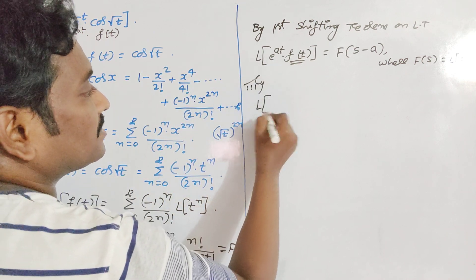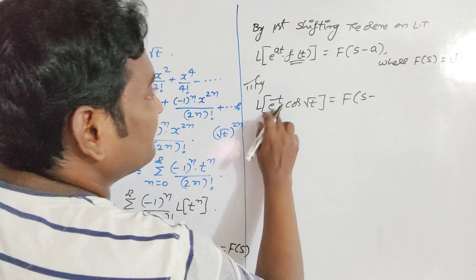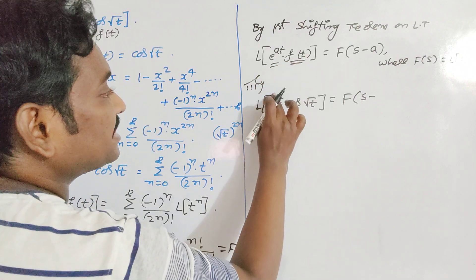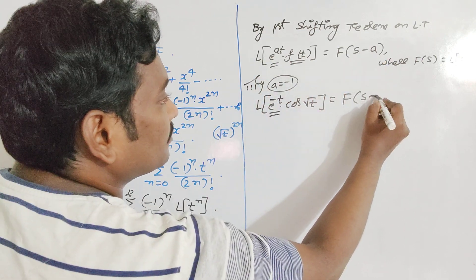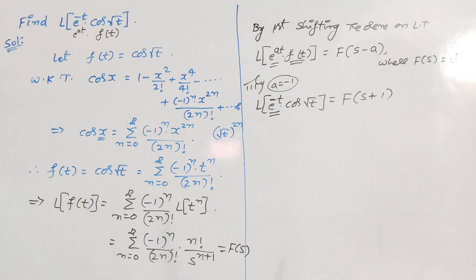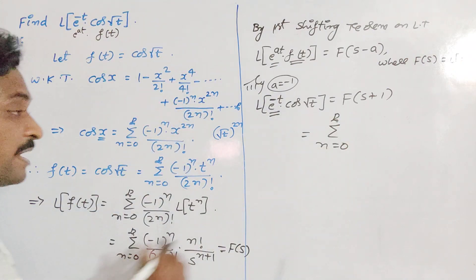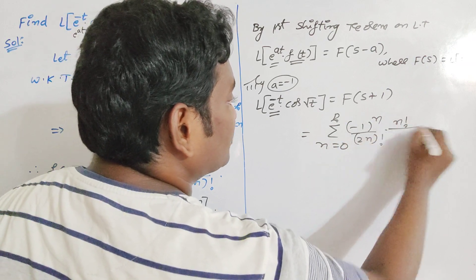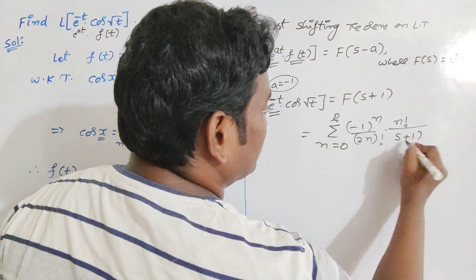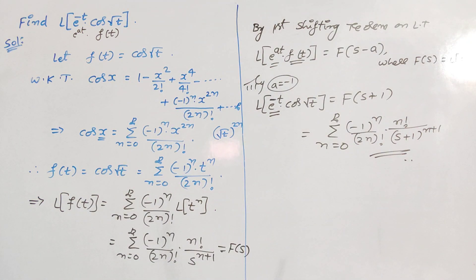Similarly, L{e^(−t) · cos√t} = F(s − a). Here we have e^(−t), so a = −1. Replace a = −1 and we get F(s + 1). In this function of s, wherever we have s, blindly replace it by s + 1. So the result is Σ (n=0 to ∞) (−1)^n · n! / [(2n)! · (s+1)^(n+1)]. This is the application of the first shifting theorem.